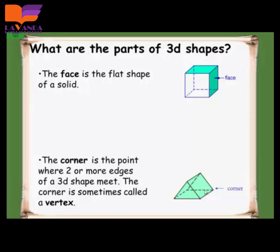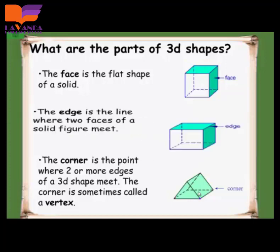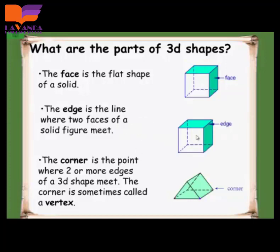Also, I have a corner. The corner of the 2D shape is the same — it's the point where two or more edges of a 3D shape meet. The corner, as we know, we sometimes call it a vertex. What is the edge? The edge is the line where two faces meet. Those lines are named edges.